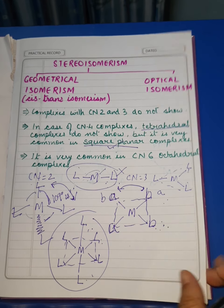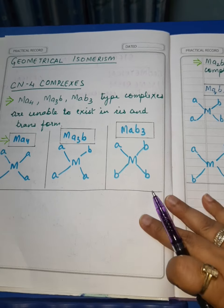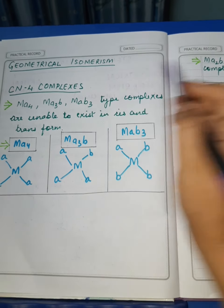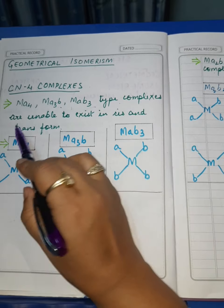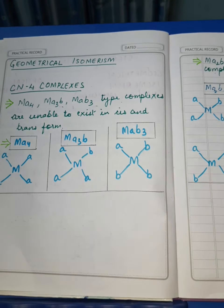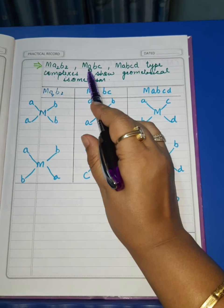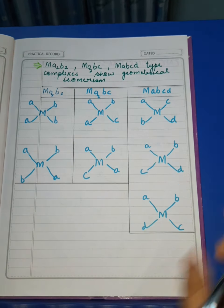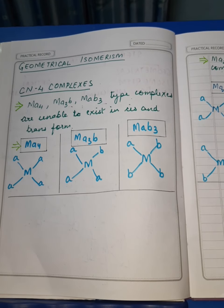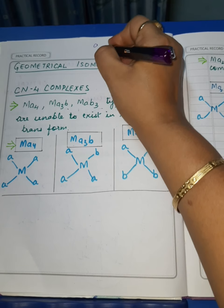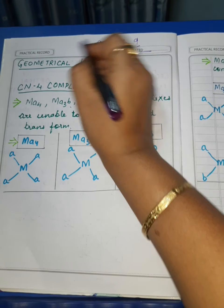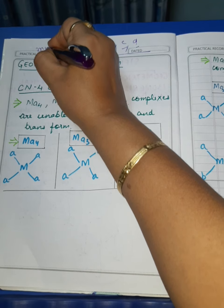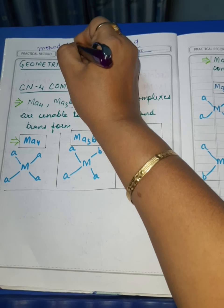We will study geometrical isomerism in CN4 complexes and CN6 complexes in detail, starting with CN4. Two facts to understand: first, MA4, MA3B, and MAB3 type complexes are unable to exist in cis and trans forms. Second, MA2B2, MA2BC, and MABCD type complexes show geometrical isomerism. A, B, C, and D are used to represent monodentate ligands.